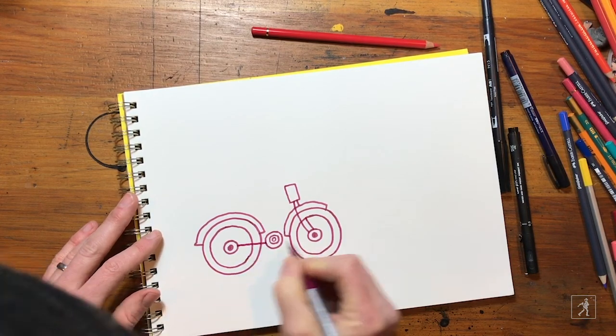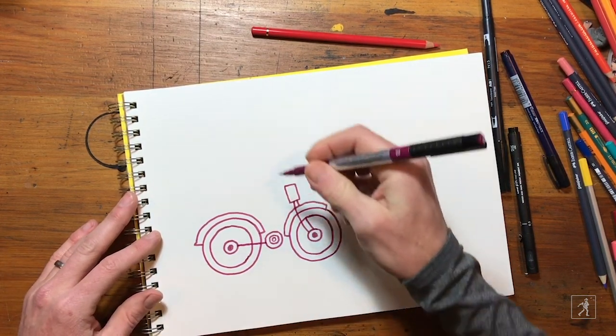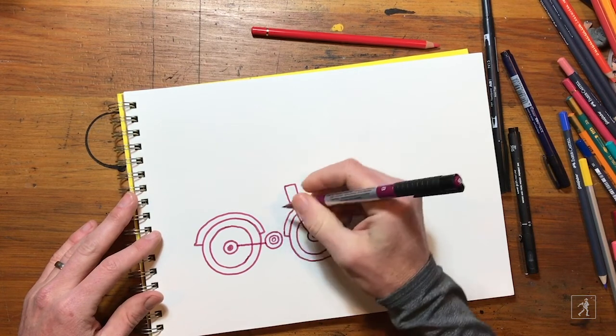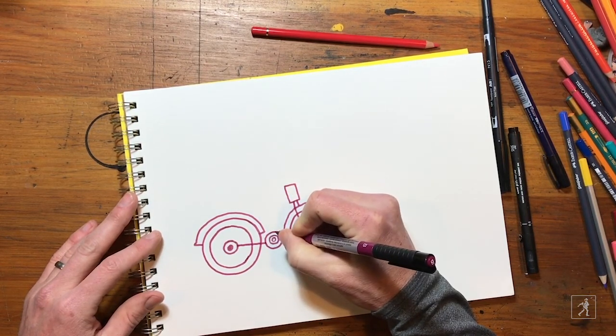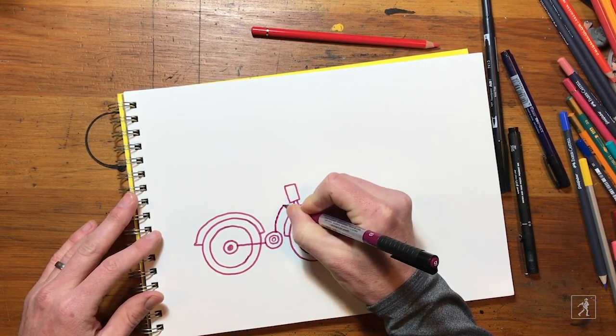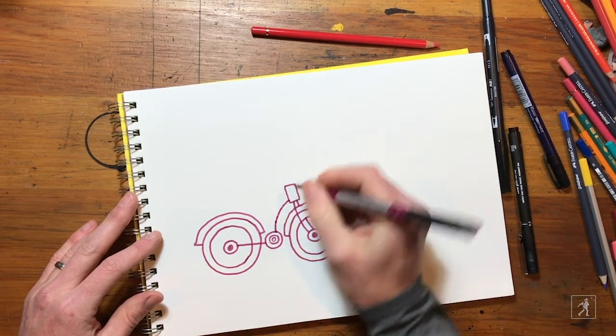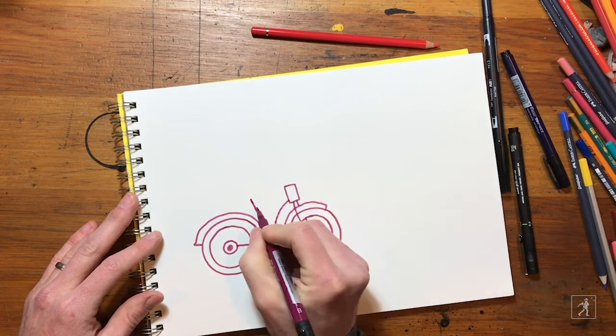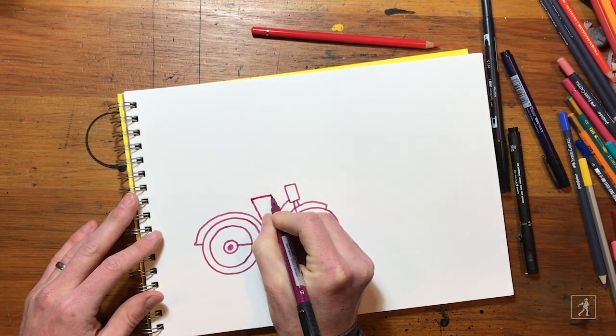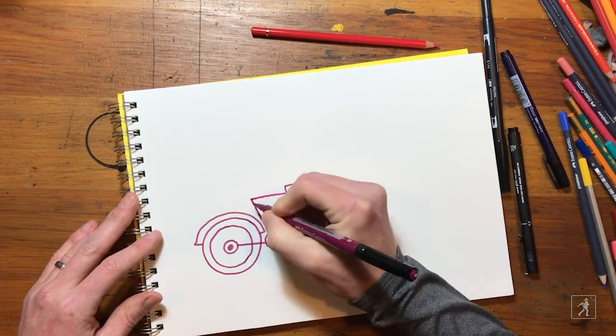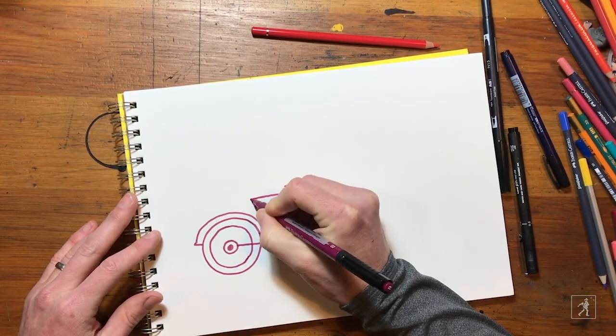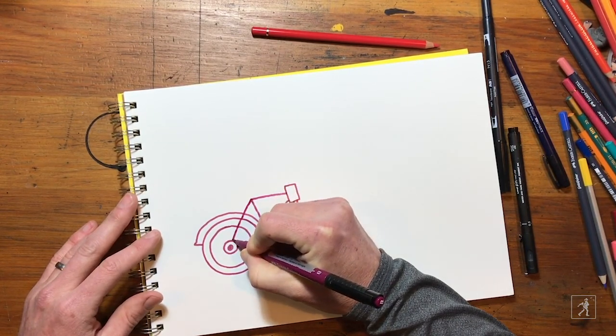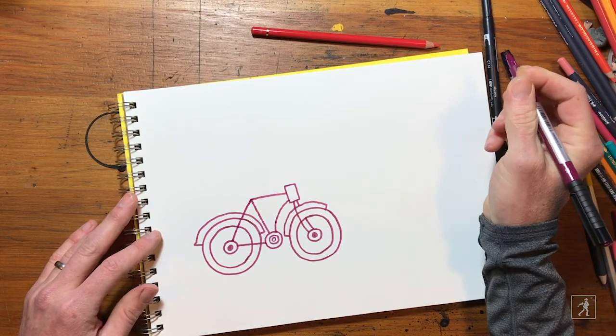Then we have part of the frame here, which is called the chain stay. We have the down tube here. Let's do the seat tube next, which is this one that goes here. The top tube goes here, and then this one's called the seat stay—I know it's a strange name—it goes right there. Now you can kind of see it's a bicycle.